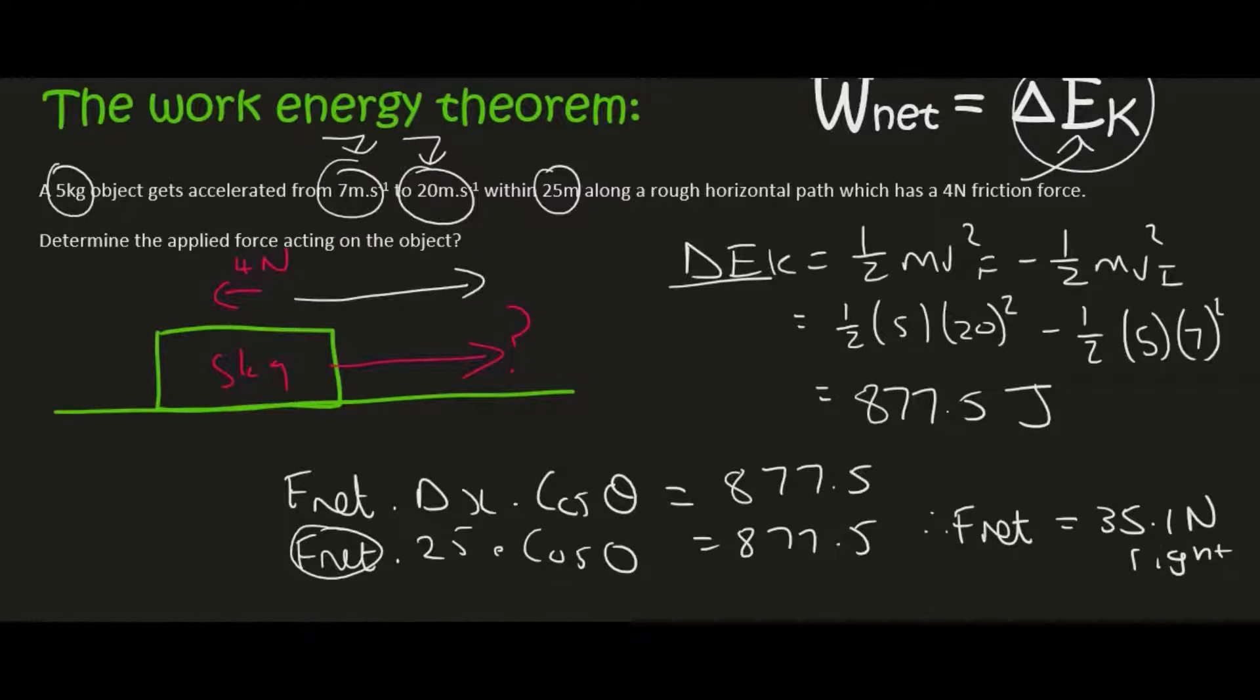Now that's not the final answer. The question says determine the applied force. F_net is the total. So F_net, if we chose right as positive, is equal to the applied force minus your force of friction.